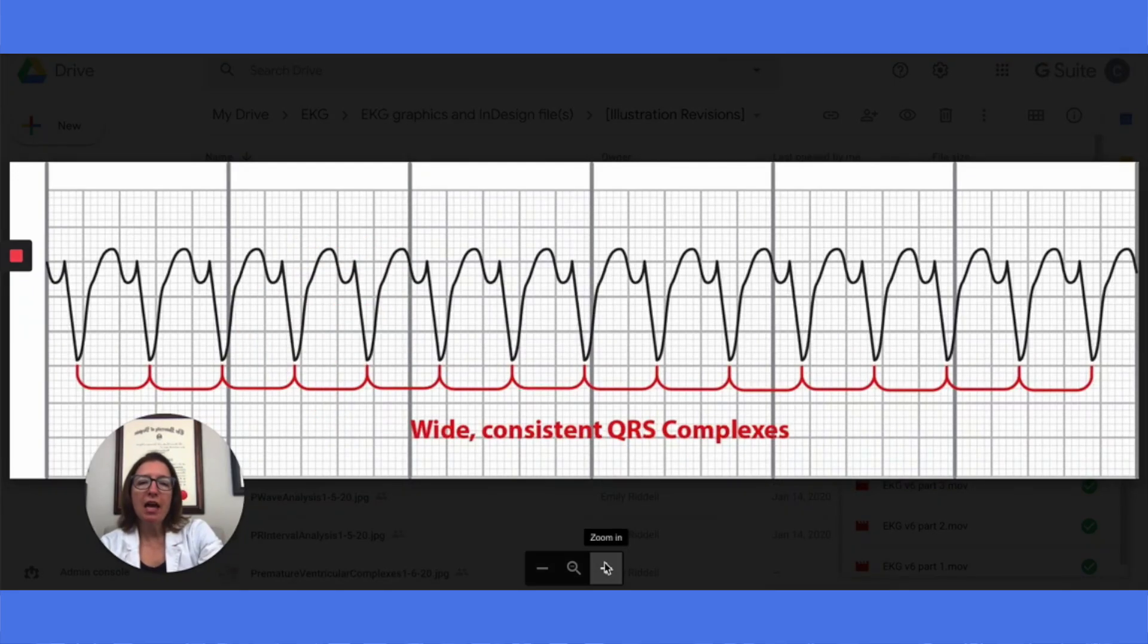In this strip, we have ventricular tachycardia. You can see we have these wide QRS complexes. They're definitely over three small boxes wide. We don't have any P waves. These QRS complexes are wide, but they are regular. So our ventricular heart rhythm is regular.